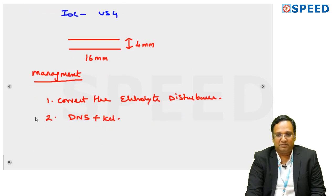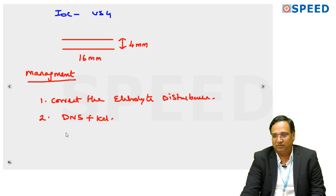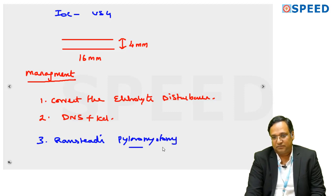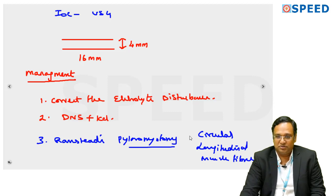Once the major electrolyte abnormality is corrected, then the treatment of choice becomes Ramstedt's pyloromyotomy. It is to divide the circular and the longitudinal muscle fiber of the sphincter so that the mucosa can get prolapsed, so the sphincter becomes relaxed.